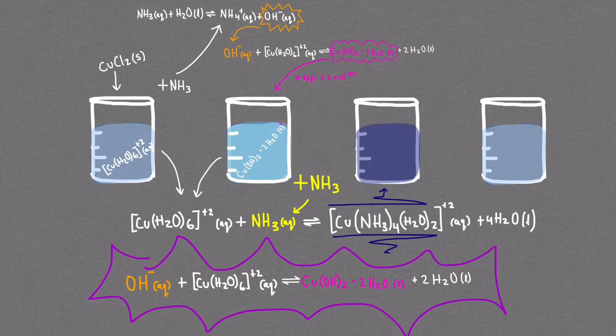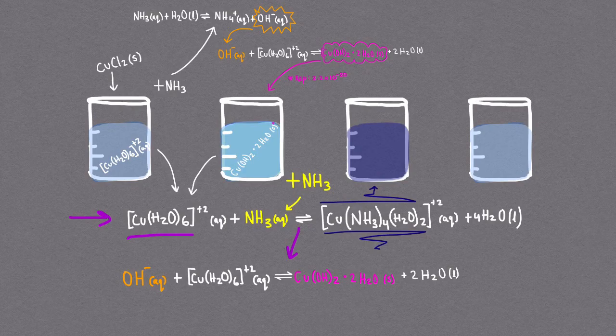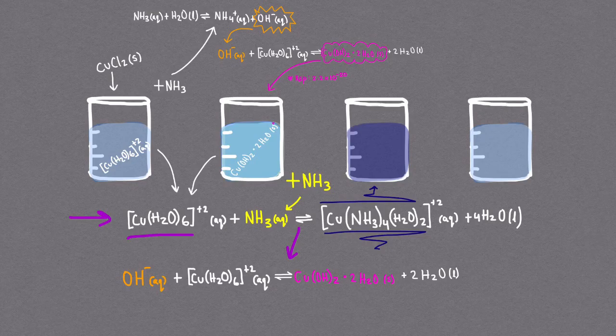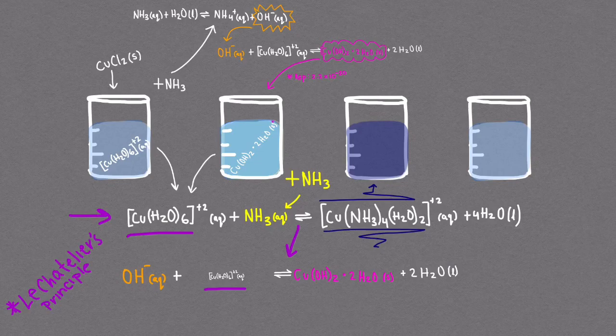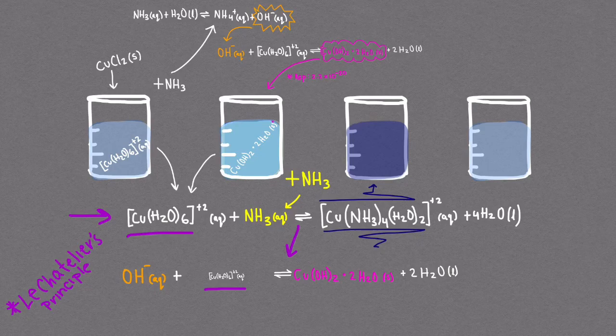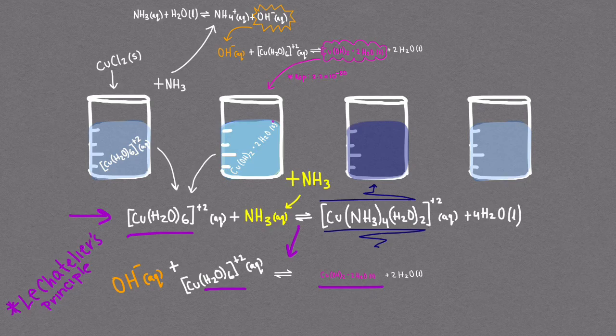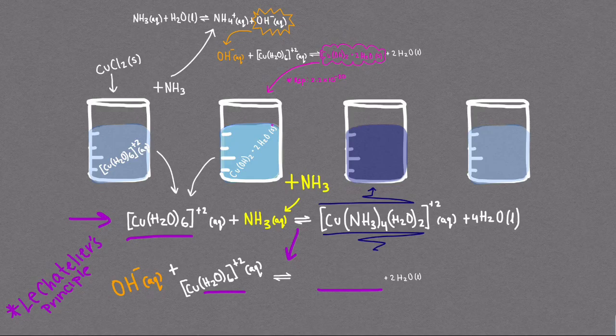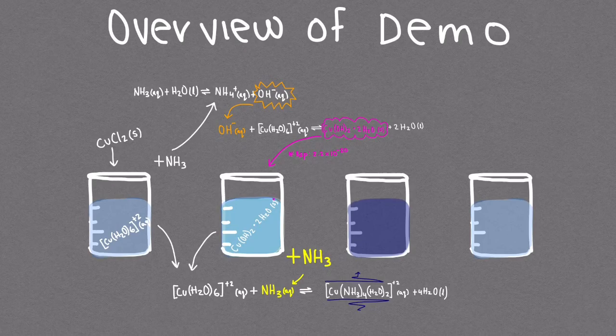If we look at the equation from above we observe that the formation of the copper ammonia complex consumes the original copper ion which is also a reactant in the copper hydroxide precipitate. As shown by Le Chatelier's principle as this reaction consumes the copper ion effectively decreasing the concentration of it in the other reaction, the reaction must respond by attempting to return to equilibrium by decreasing the concentration of the copper hydroxide precipitate. As more ammonia is added the copper hydroxide precipitate disappears entirely and the reaction itself ceases to occur in the solution.